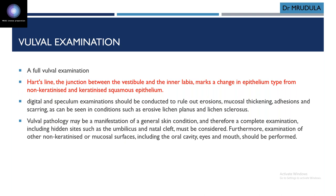These findings can be seen in conditions like erosive lichen planus and lichen sclerosis. The basic differentiating point: lichen sclerosis never involves the vagina — remember this very well. Whenever there is vaginal involvement, it is always lichen planus. So whenever you have to distinguish between lichen planus and lichen sclerosis, first see whether there is vaginal involvement. Lichen sclerosis is limited to the external vulva only.